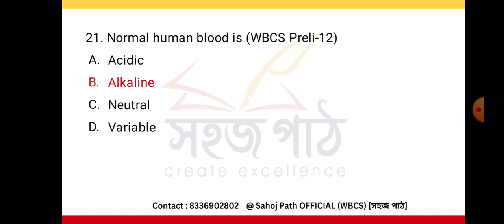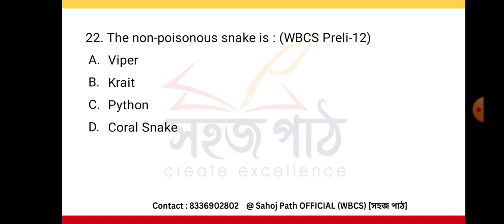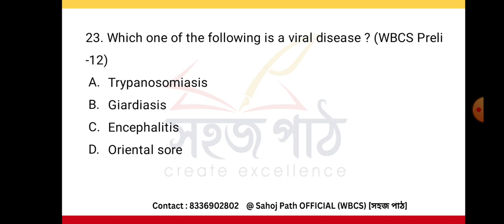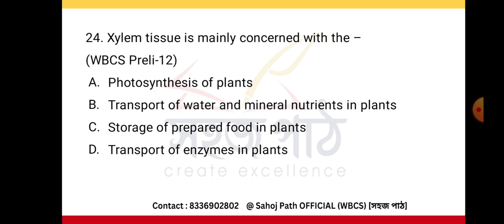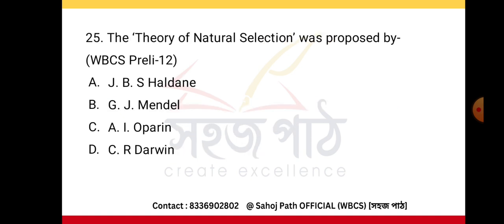Normal human blood is alkaline. The non-poisonous snake is the python. A viral disease among the options listed is not trypanosomiasis (which is caused by a protozoan). Xylem tissue is mainly concerned with the transport of water and mineral nutrients in plants.